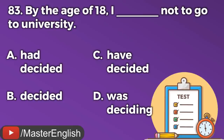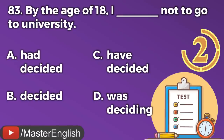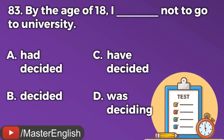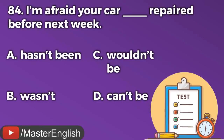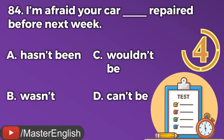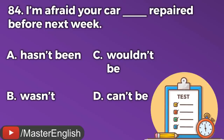Question number eighty-three. By the age of 18, I ___ not to go to university. A: Had decided. B: Decided. C: Have decided. D: Was deciding. The correct answer is A: Had decided. By the age of 18, I had decided not to go to university. Question number eighty-four. I'm afraid your car ___ repaired before next week. A: Hasn't been. B: Wasn't. C: Wouldn't be. D: Can't be. The correct answer is D: Can't be. I'm afraid your car can't be repaired before next week.